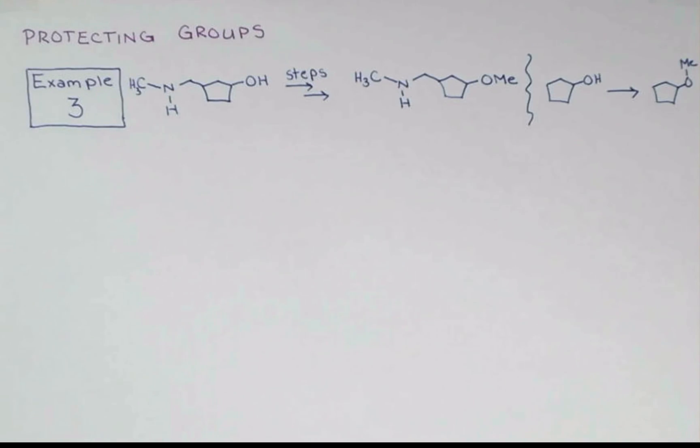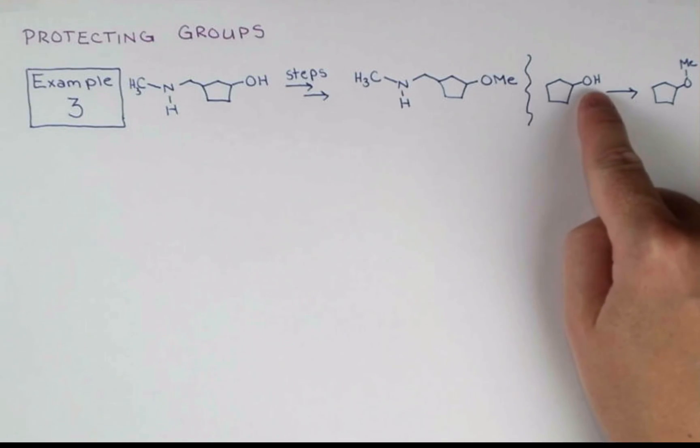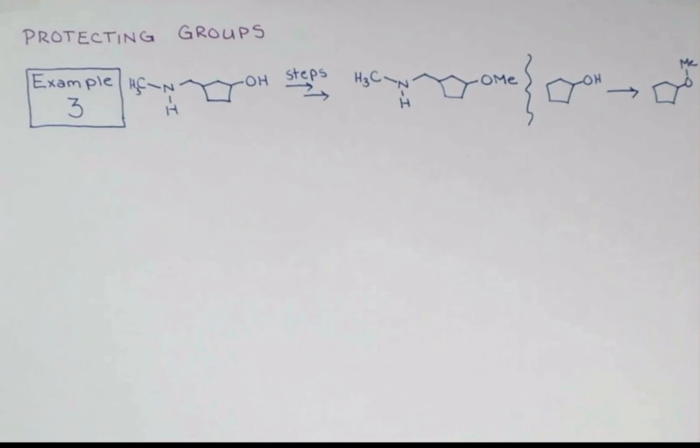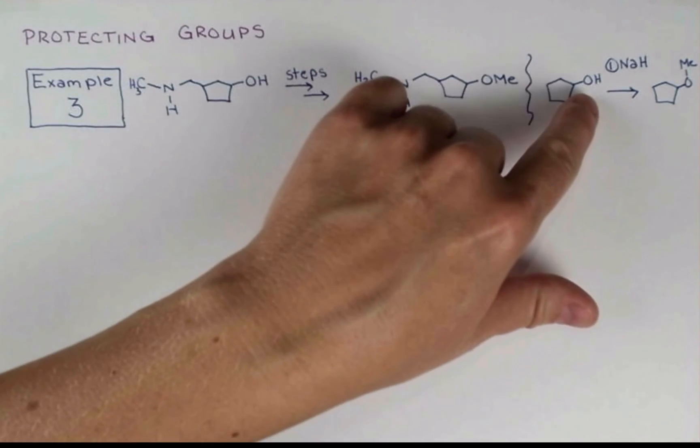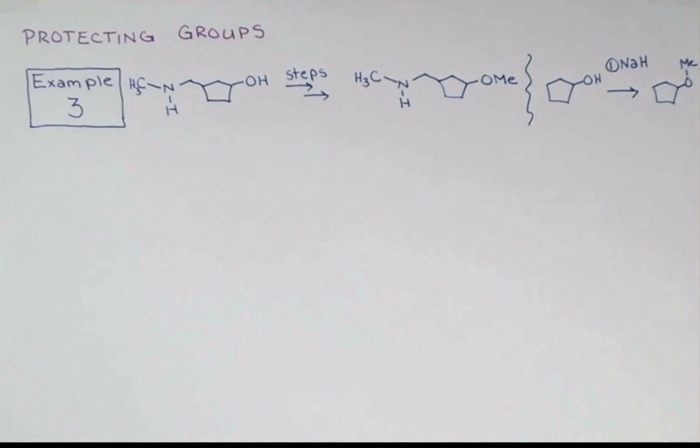We can use a reaction called the Williamson ether synthesis, where we first deprotonate this hydrogen atom here, and then we alkylate with something like iodomethane. A great base to use for this reaction is sodium hydride. This will deprotonate our alcohol completely, forming an alkoxide, and as a byproduct produces hydrogen gas, which bubbles out of your reaction. Then in a second stage of this reaction in the same flask, we can treat this with methyl iodide, and that'll alkylate our oxygen over here giving the methyl ether.